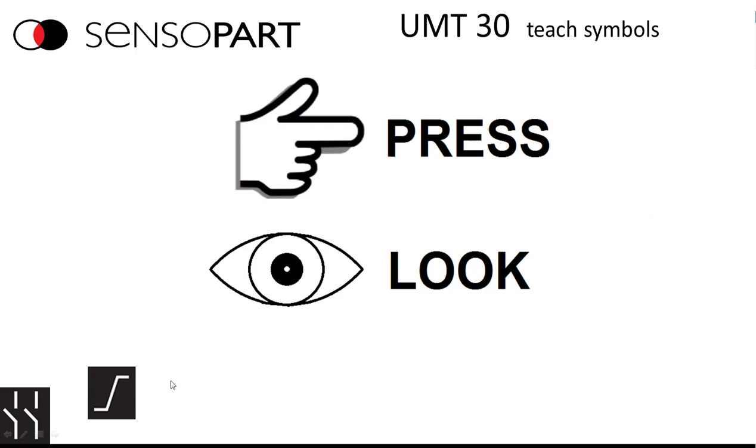So if you see that in the lower left corner, it means that it only pertains to that version. Everything else we talk about pertains to both analog and discrete versions.